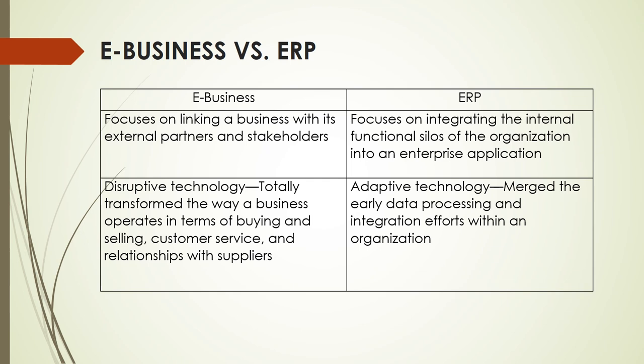Looking at the difference between e-business or electronic business and ERP: in electronic business, the focus is on linking e-business with its external partners and stakeholders, and disruptive technology is employed to totally transform the way a business operates in terms of buying and selling, customer service, and relationships with suppliers. While in ERP, the focus is on integrating the internal functional silos of the organization into an enterprise application, and adaptive technology is employed to merge early data processing and integration efforts within an organization.